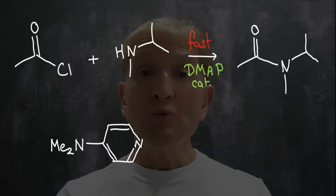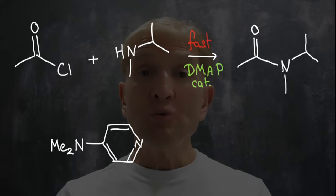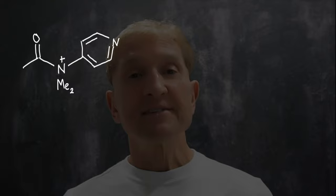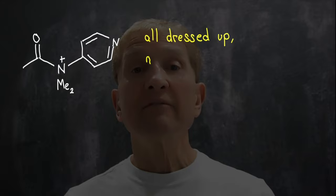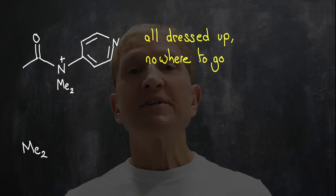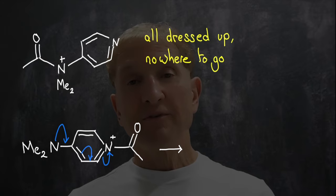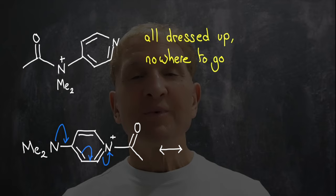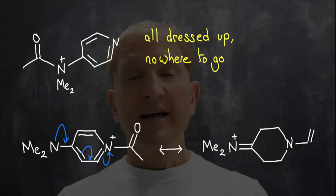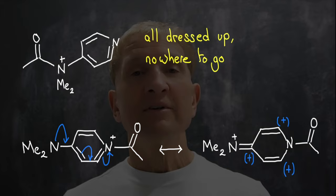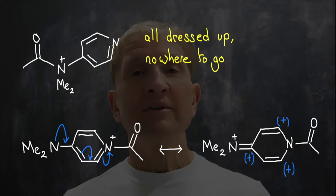DMAP acts as a catalyst by getting acylated itself. But there are two possible sites where it can be acylated. One is the exocyclic dimethylamino group — if it acylates there, the positive charge is stuck; it cannot resonate with the aromatic ring because that would involve forming five-coordinate nitrogen. However, if it acylates on the pyridine nitrogen, the positive charge can flip around the ring in the ortho and para positions, and onto the exocyclic dimethylamino group as well. That's a much more favorable arrangement. Once the DMAP is acylated, it transfers the acyl group to the methyl isopropyl amine, accelerating the reaction. That's how DMAP acts as a catalyst — by acylating on the pyridine nitrogen in preference to the exocyclic dimethylamino group.